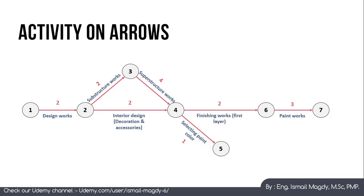After that we have two parallel activities: the first layer of finishing works consuming two months, and the client selecting paint color estimated at one month. Selecting paint color is also not critical — it could be delayed one more month without affecting the schedule. The final activity, paint works, depends on both finishing works and selecting paint color, so a dummy activity is added to show that dependency. The dummy activity is not real; it only represents the logical relationship.